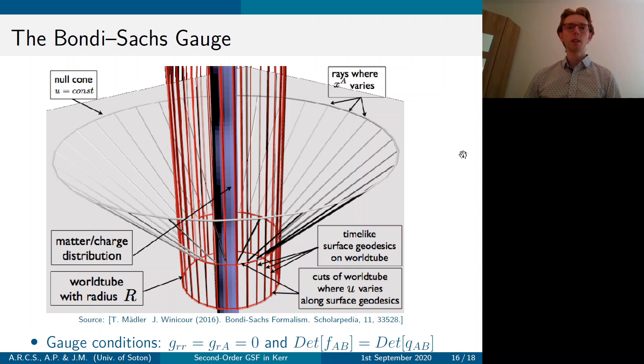So the specific gauge we're going to fix to is the Bondi-Sachs gauge. And that is where spacetime is built out of null cones of constant retarded time U. And where the null geodesics within the cone have constant angular components. So you can imagine spacetime as being a series of null cones. And this gauge was built in order to analyze gravitational radiation. So it's a convenient gauge to use. And these are the corresponding gauge conditions.